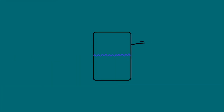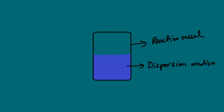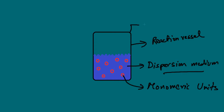This is our reaction vessel. This fluid is the dispersion medium. We add the monomeric units into the reaction vessel. The next step is controlling the temperature of this reaction vessel — it has a controlled temperature.